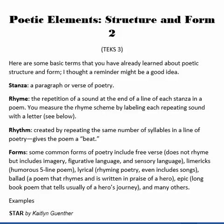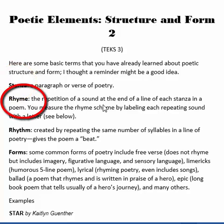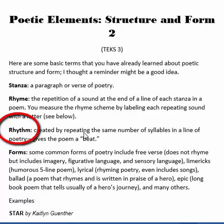If you turn to page 57 in your reading journal, let's look at a few more characteristics of the structures of poetic elements. Here are some basic terms you probably already know, just a quick reminder. A stanza is the paragraph or verse. A rhyme is when you repeat the last word of a line so that it creates a rhyming effect — rhyming can create a feeling of moving forward or even confusion, depending on how it's done. Rhythm is created by the number of syllables in a line, giving a beat to each line.